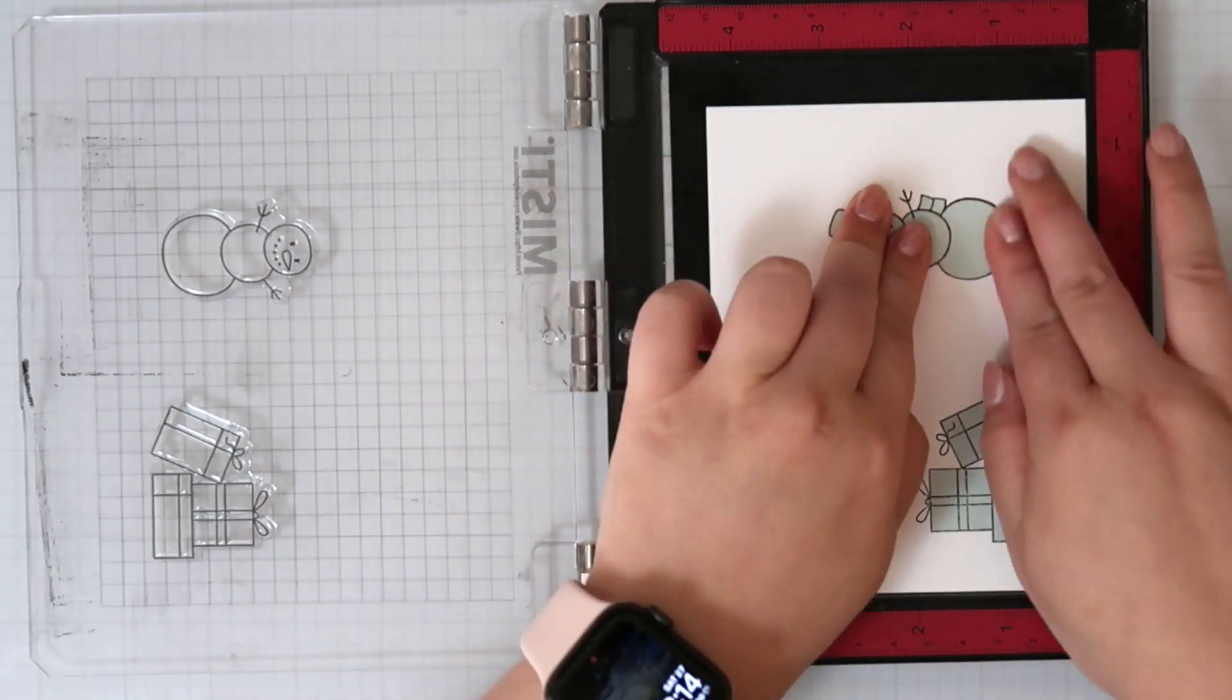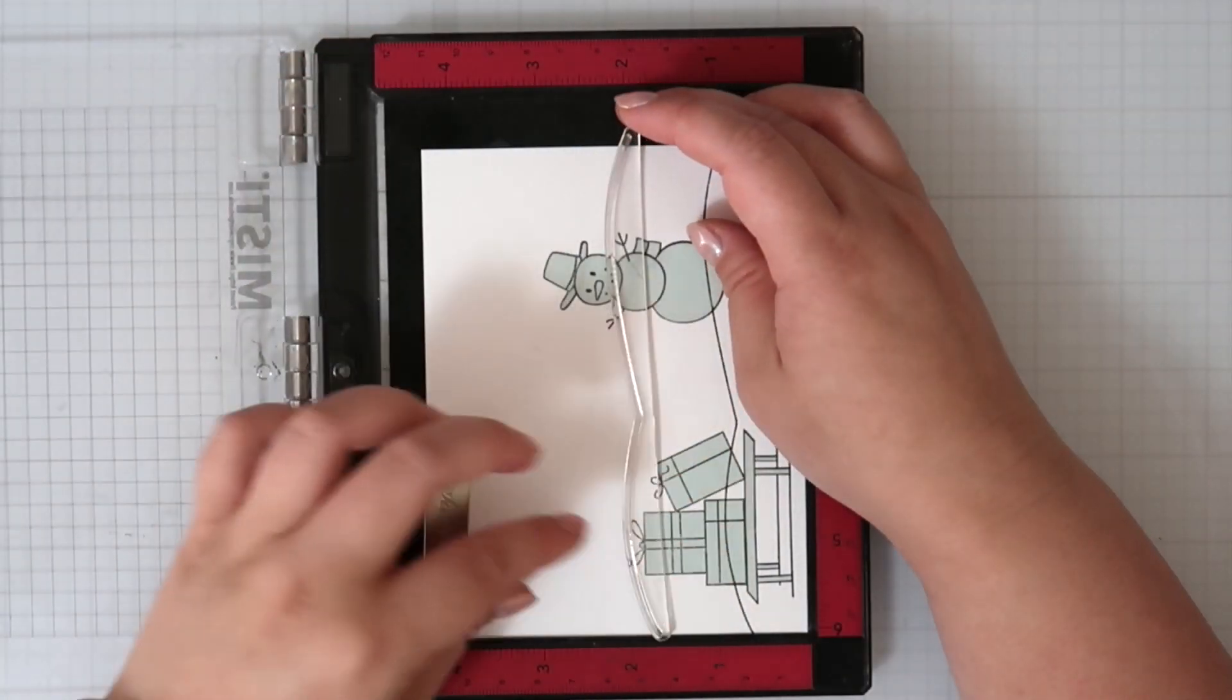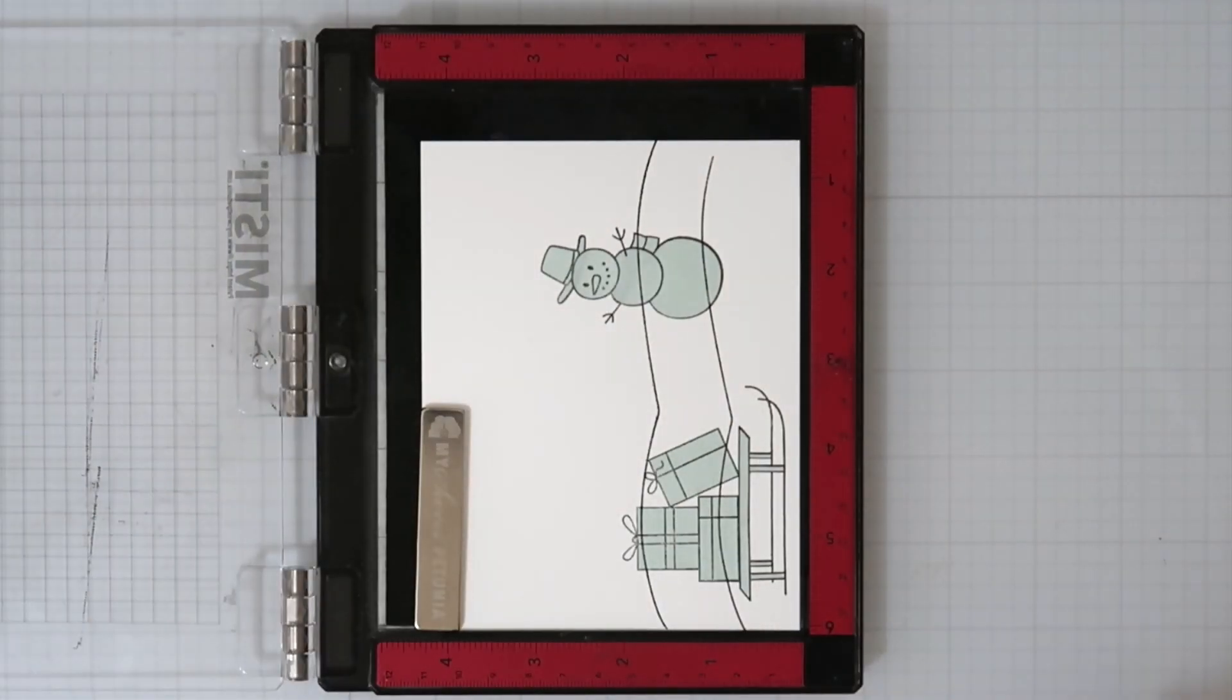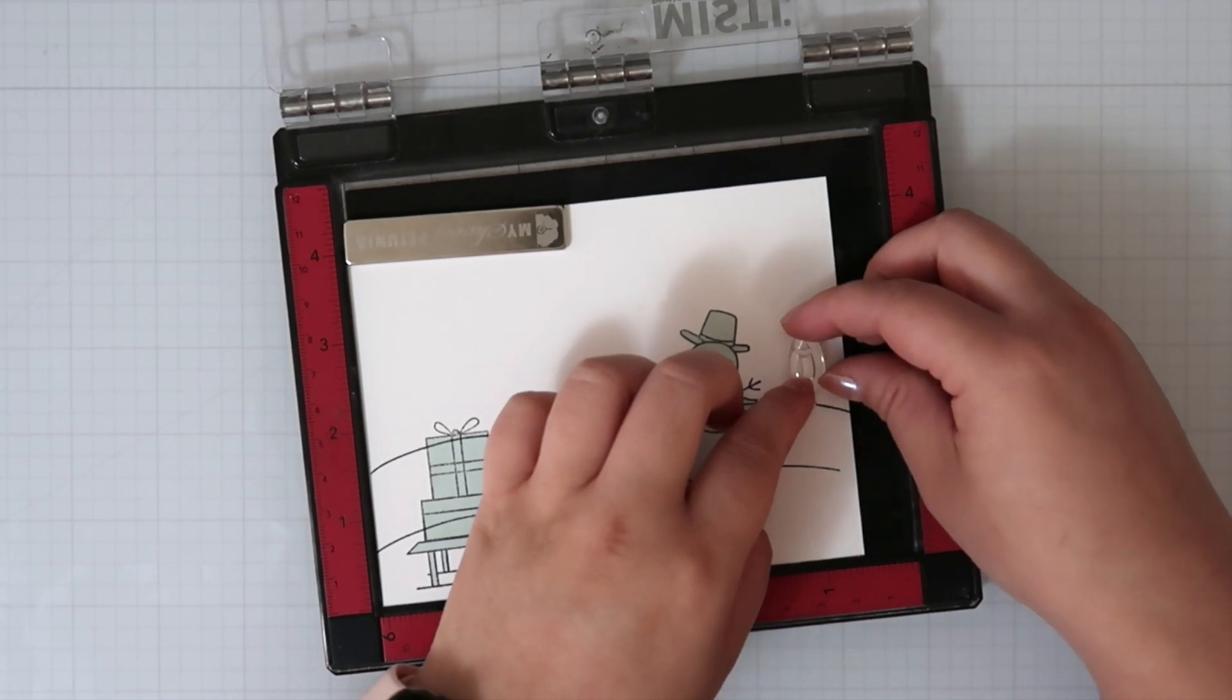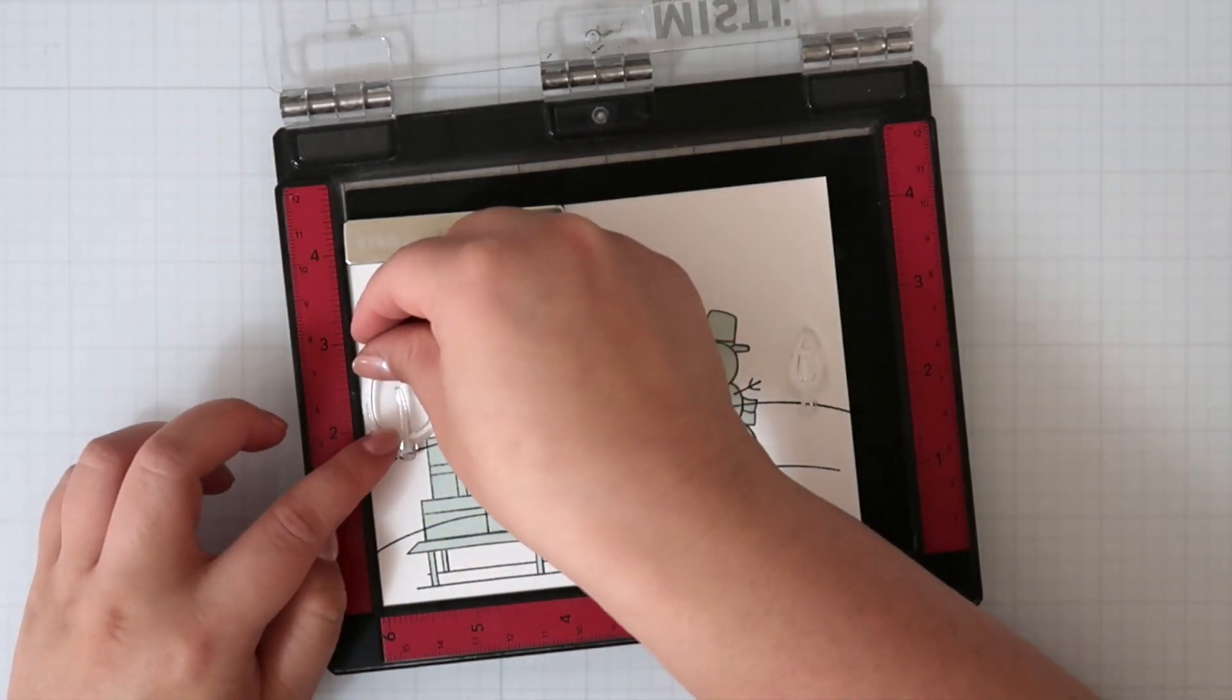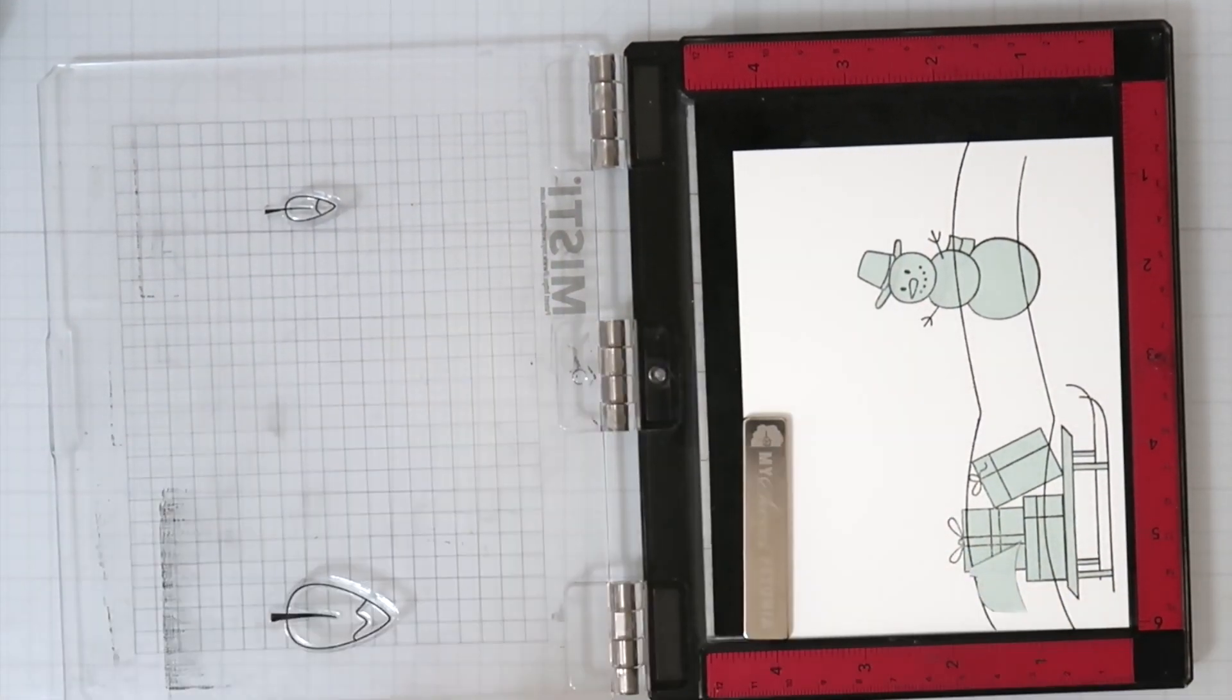With masking, you want all the items that you want in front, like the presents and the snowman, to be stamped first. Then I move on to the snow banks. There's only one snow bank in this stamp set, and I thought it was going to line up differently, but it just happened to line up the same. Then I move on to the trees, and I'm also laying out my sentiment because sometimes I forget about the sentiment and don't have enough space for it.